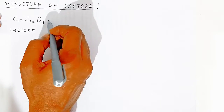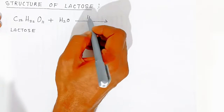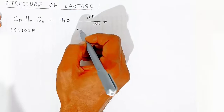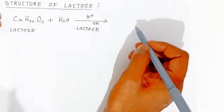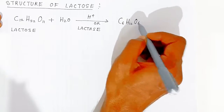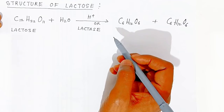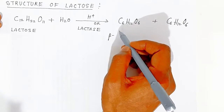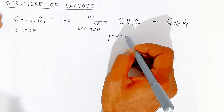On acid hydrolysis of lactose, or using the enzyme lactase, the disaccharide is broken down into two monosaccharides, both with formula C₆H₁₂O₆. The first monosaccharide is beta-D-galactose.